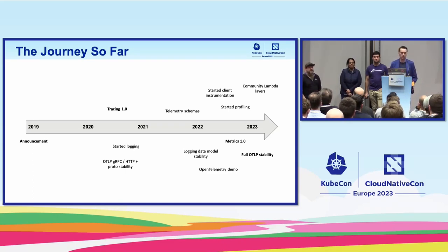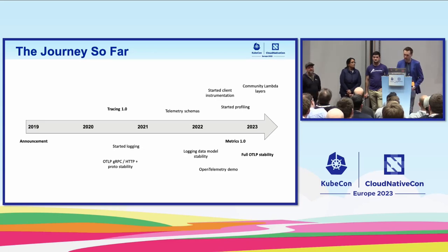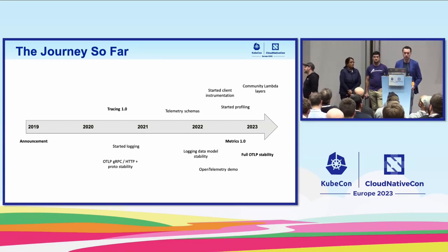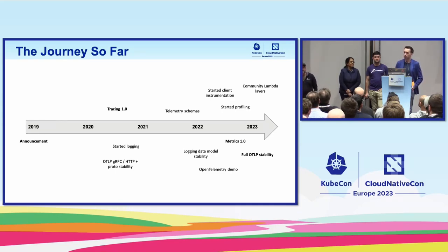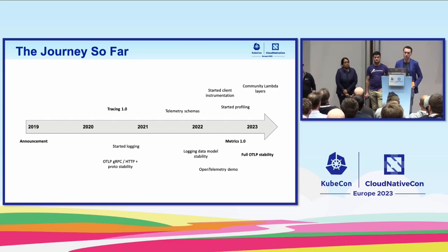There are other data types coming in. Logging is being added as a new signal to OpenTelemetry. You can see on this timeline when we started logging and when we started to achieve things like data model stability. We're hoping that later this year we'll achieve 1.0 or stability for logging across all the different components — obviously open source, so that's TBD. But that's where we are with logging.